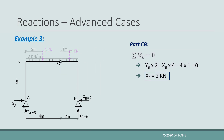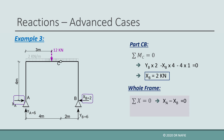Now, let us consider the equilibrium of the whole frame. Solving sigma X equals zero for the whole frame gives XA as 2 kN.